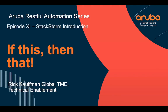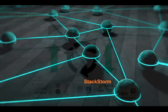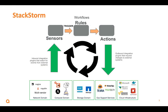Episode 11 of the Aruba RESTful Automation Series — we're going to talk about StackStorm. I'm going to introduce you to StackStorm, the If This Then That automation platform. We use sensors to listen for events in all these other applications, and when we hear something, we load a trigger which kicks off a rule, and that rule says: if this trigger happened, go do these things.